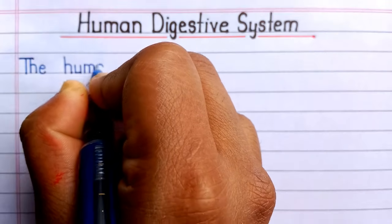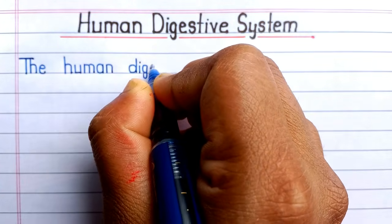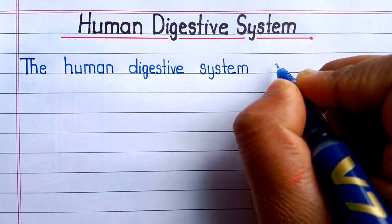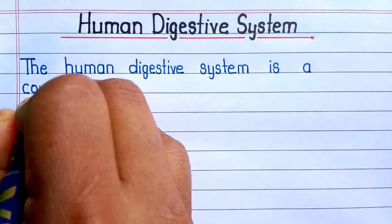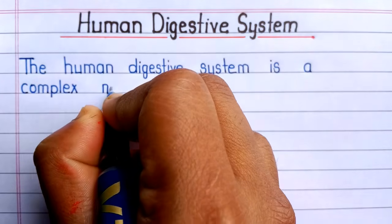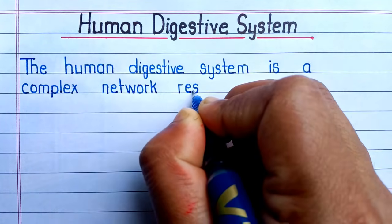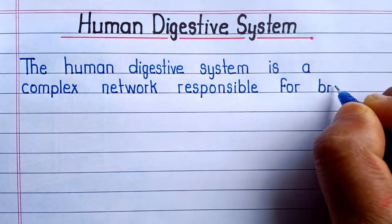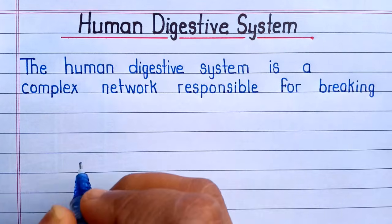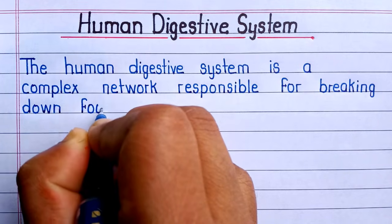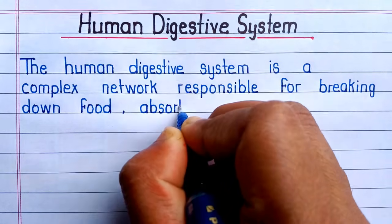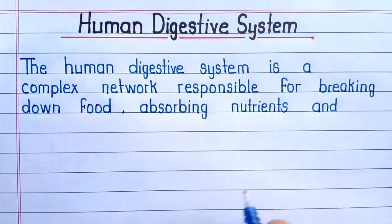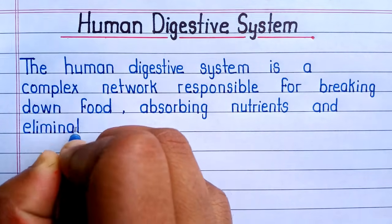Hello friends, today our topic is the human digestive system. The human digestive system is a complex network responsible for breaking down food, absorbing nutrients, and eliminating waste.